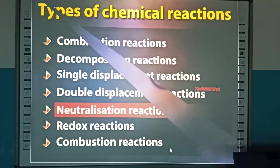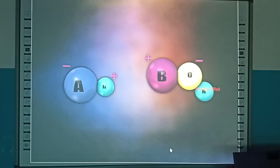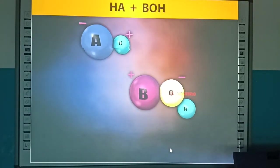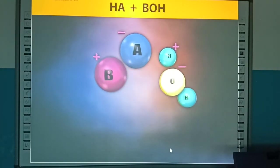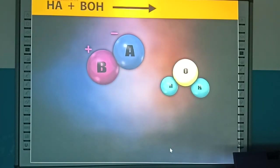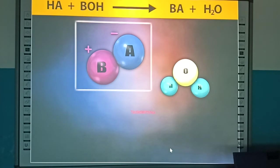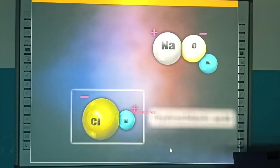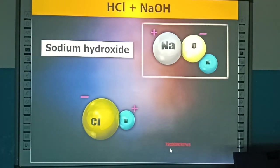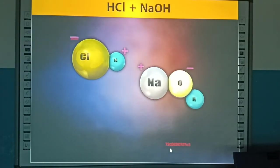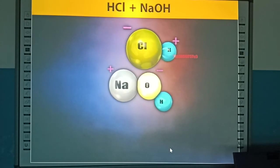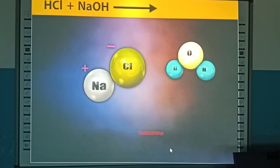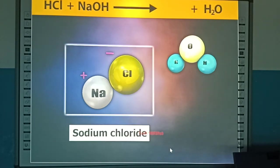Neutralization reactions are double displacement reactions that take place between an acid and a base, forming water and a salt. For example, hydrochloric acid and sodium hydroxide react to form water and sodium chloride.